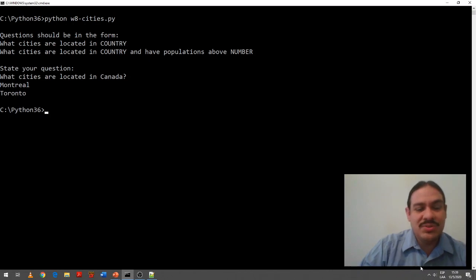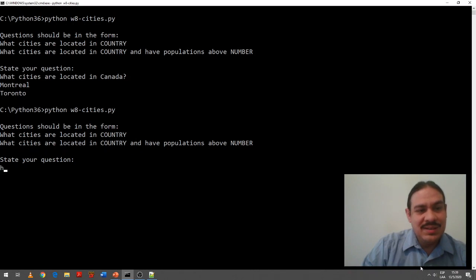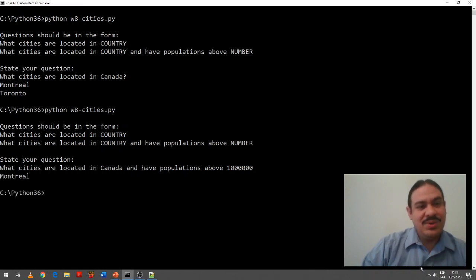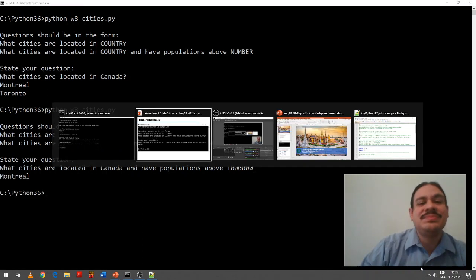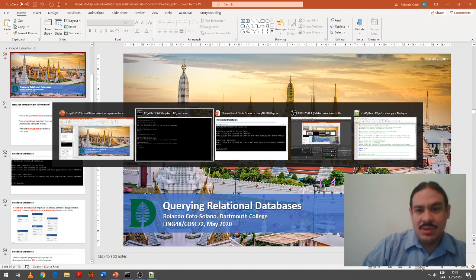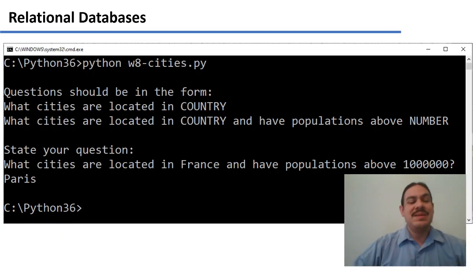Montreal and Toronto. Maybe you can ask more questions like, what cities are located in Canada and have populations above one million? Montreal. All right. So let's take a look at this very small example program.